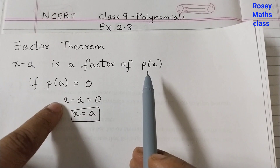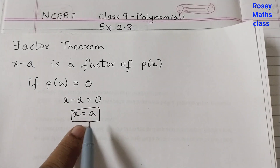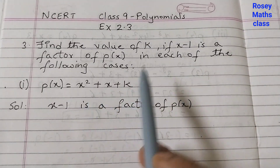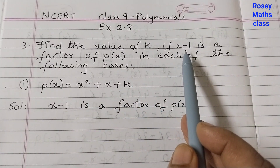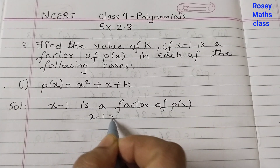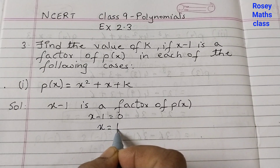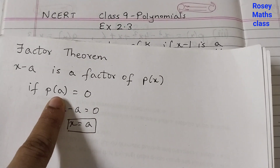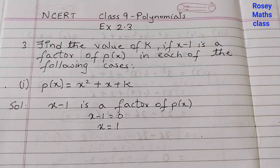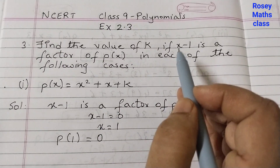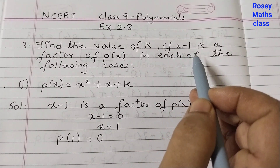That means we set x minus a to 0, we get x as a, and then we find p of a. So in this case x minus 1 is a factor, so we set x minus 1 equals to 0, giving x equals to 1, and now we find p of 1. p of 1 is equal to 0, because x minus 1 is a factor — that is given to us.